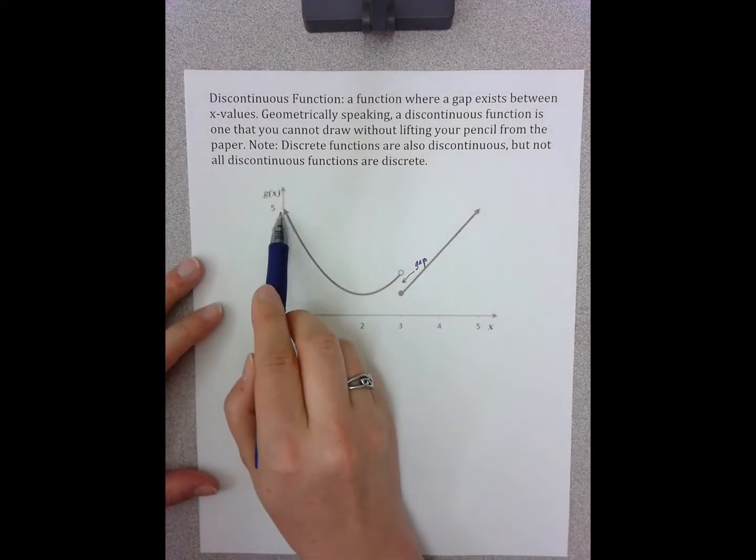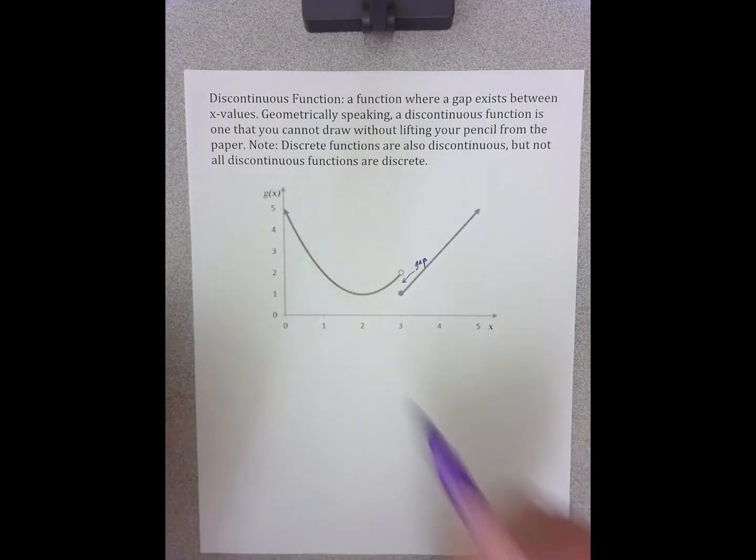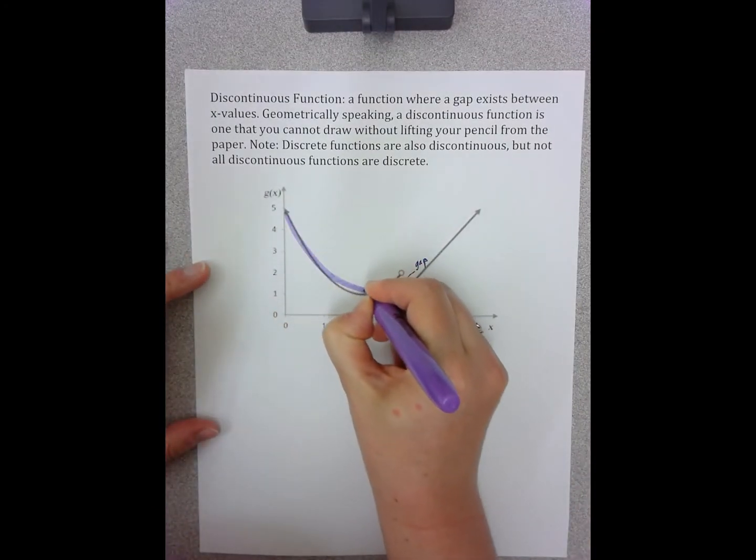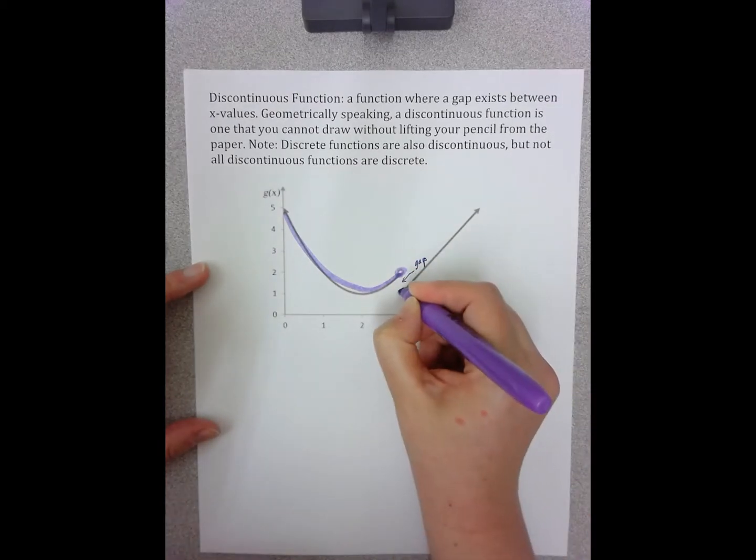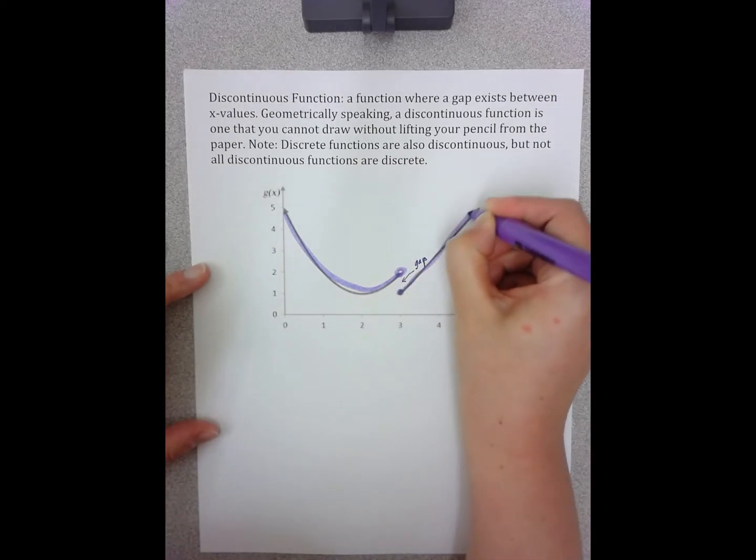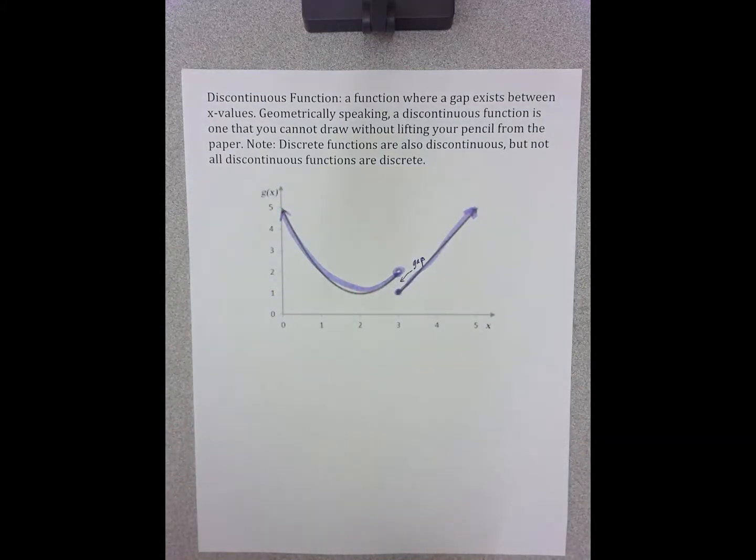So as you notice here, if I were to draw this function, I would draw, open circle, and to go to the next part, I'd have to pick up my pen. And that's what makes it discontinuous.